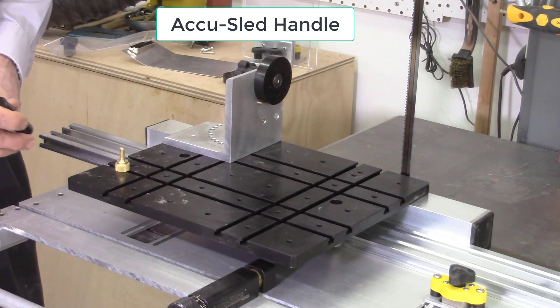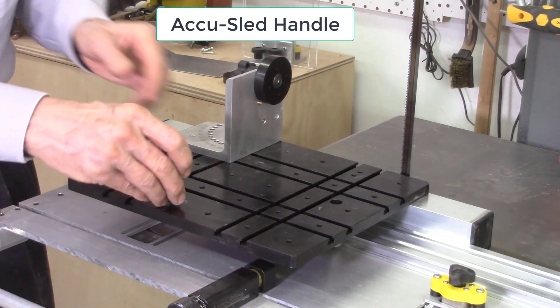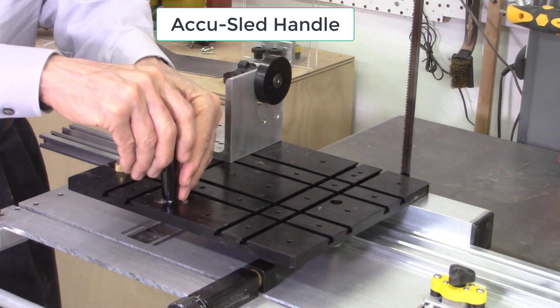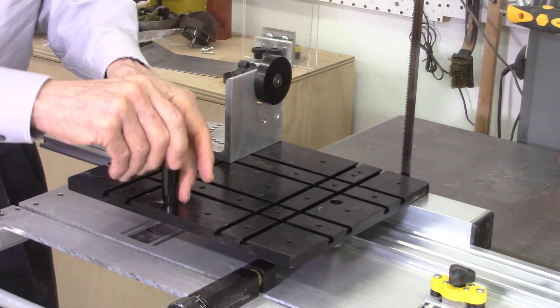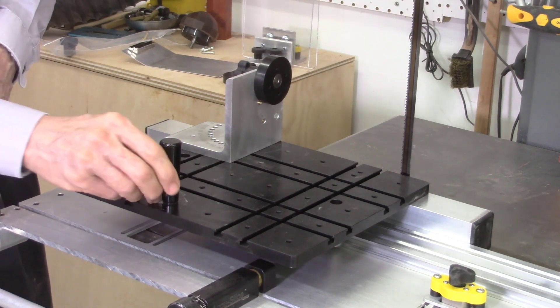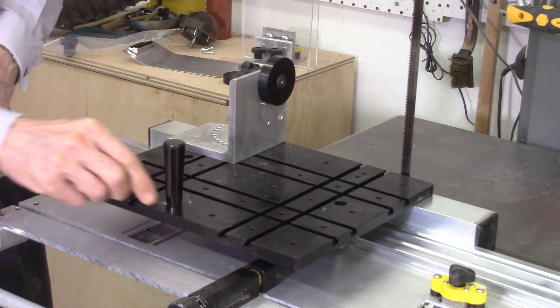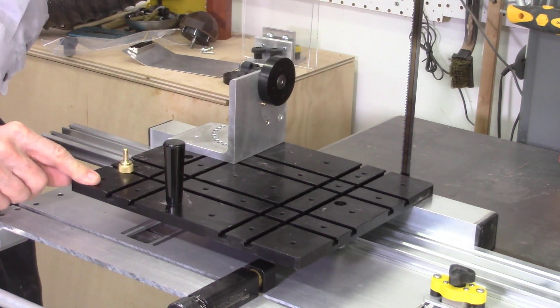The handle included with the AccuFacet system is designed to screw into any one of the tapped holes in the AccuSled plate. This handle makes it much easier to push the AccuSled system through the bandsaw blade. The handle can be attached to any position, whatever is comfortable for you.